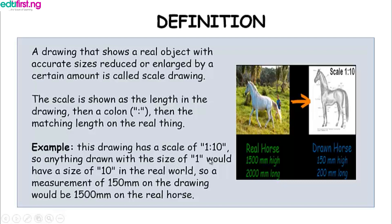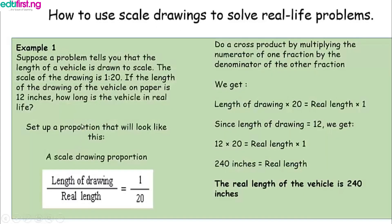So anything drawn with a size of 1 would have a size of 10 in the real world. For example, a measurement of 150 millimeters on the drawing would be 1500 millimeters on the real horse.